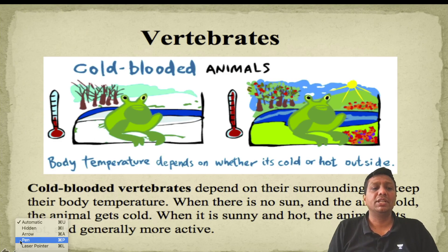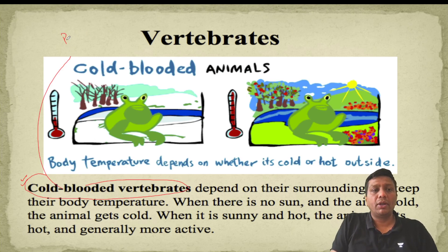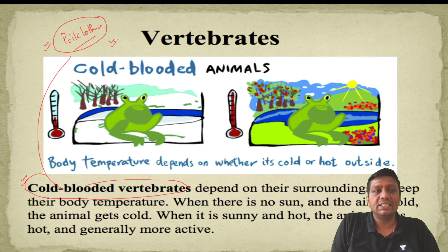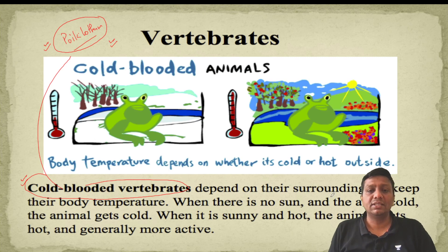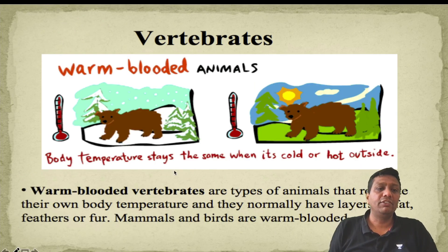There are two important properties of vertebrates: cold-blooded animals and warm-blooded animals. Cold-blooded animals are also called poikilotherms. Poikilotherm animals are those whose body temperature changes with respect to environmental conditions. These animals do not feel cold and hot situations the same way. Fishes, amphibians, and reptiles are all considered poikilotherms or cold-blooded. Their body temperature varies with surrounding conditions, so they can survive easily in both summer and winter.